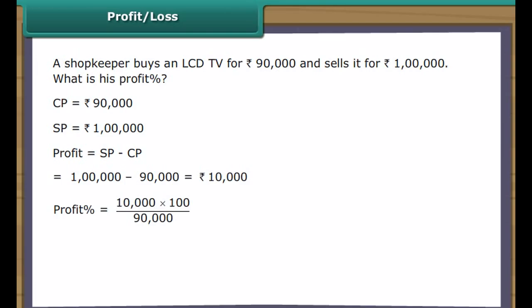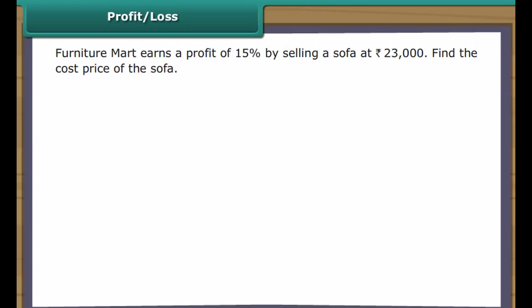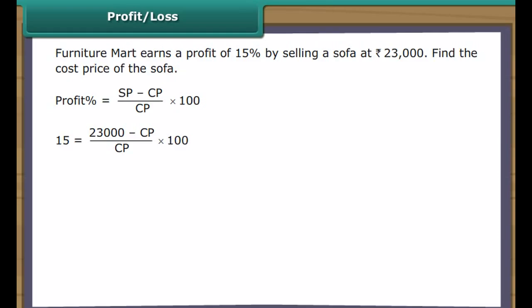Furniture Mart earns a profit of 15% by selling a sofa at Rs. 23,000. Find the cost price of the sofa. Profit percentage equals SP minus CP upon CP into 100. So 15 equals 23,000 minus CP upon CP into 100. Solving: 15 CP equals 23,000 minus 100 CP, so 115 CP equals 23,00,000, which gives CP equals Rs. 20,000. The cost price of the sofa was Rs. 20,000.